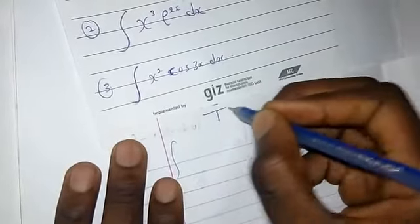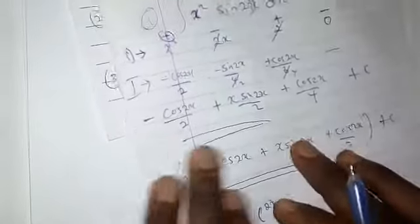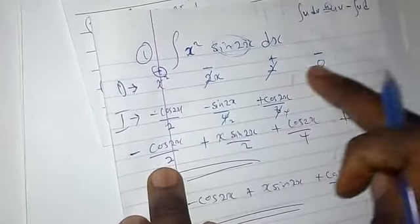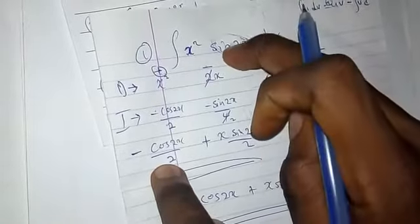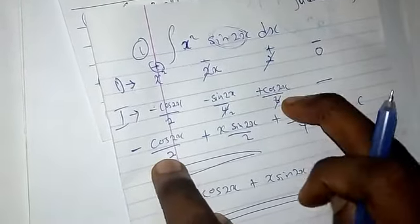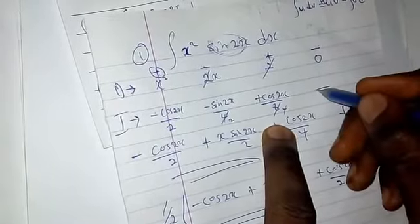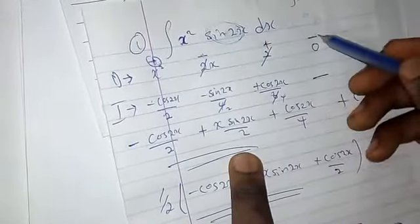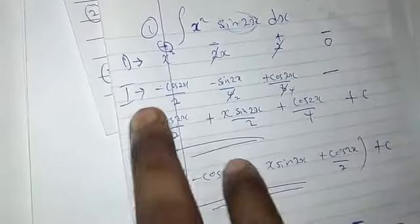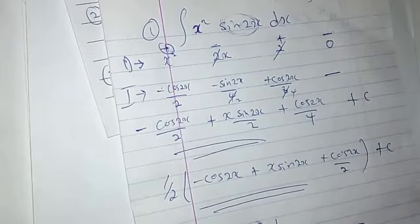Now test yourself with number 3: the integral of (x² + 3x) — follow the same procedure. Bring your algebraic function into the D column, keep differentiating until you reach zero, then integrate the other function down the I column. Assign alternating signs plus, minus, plus, minus, then multiply them together and simplify. Thank you — if this seems helpful, please subscribe for more shortcuts videos. Have a nice day!